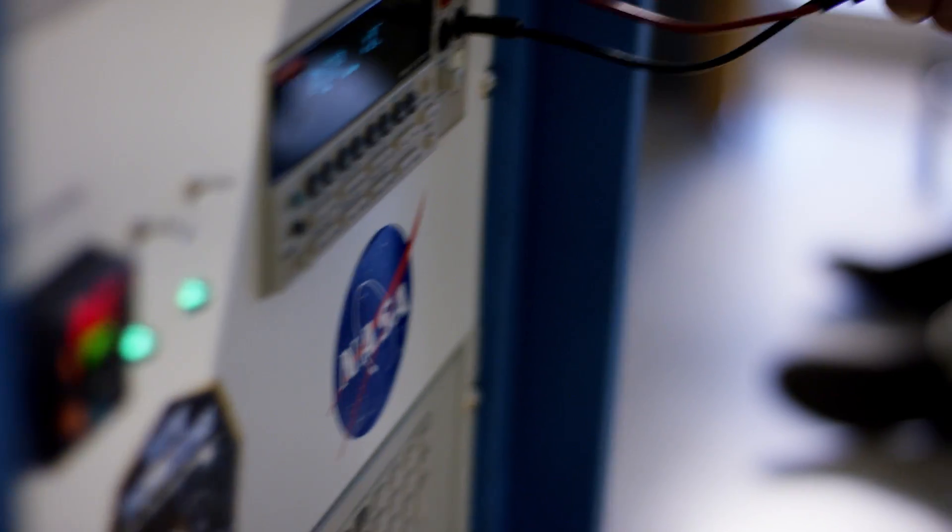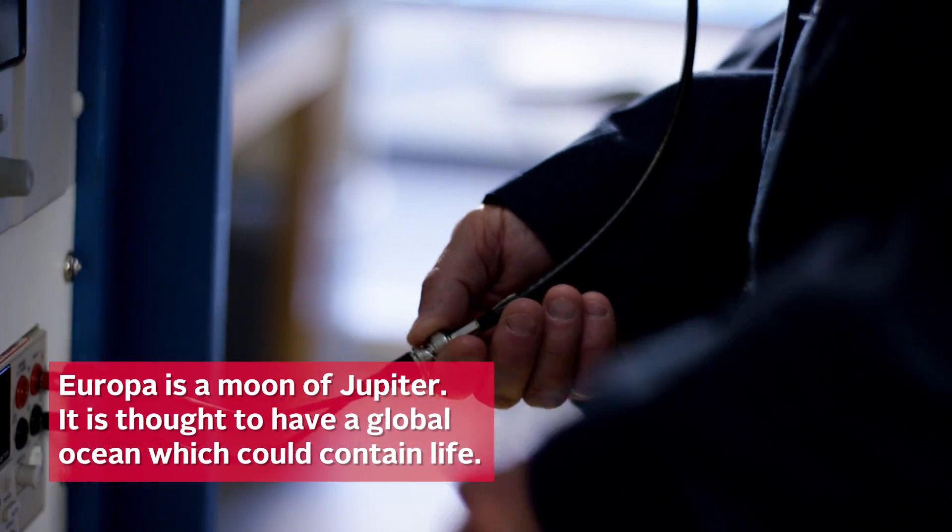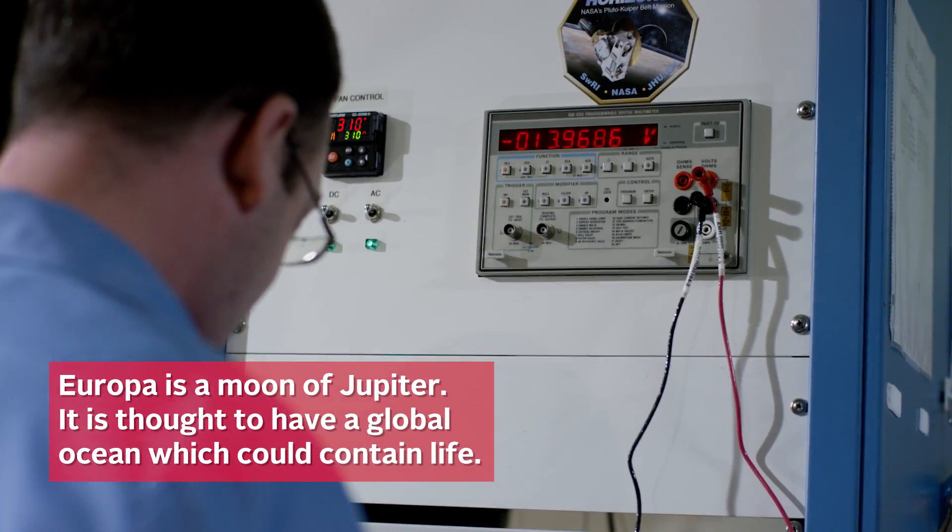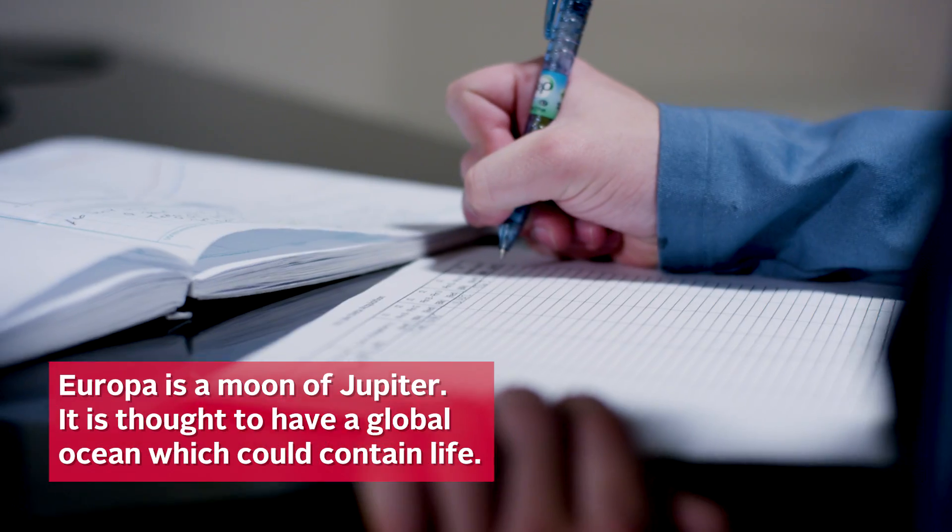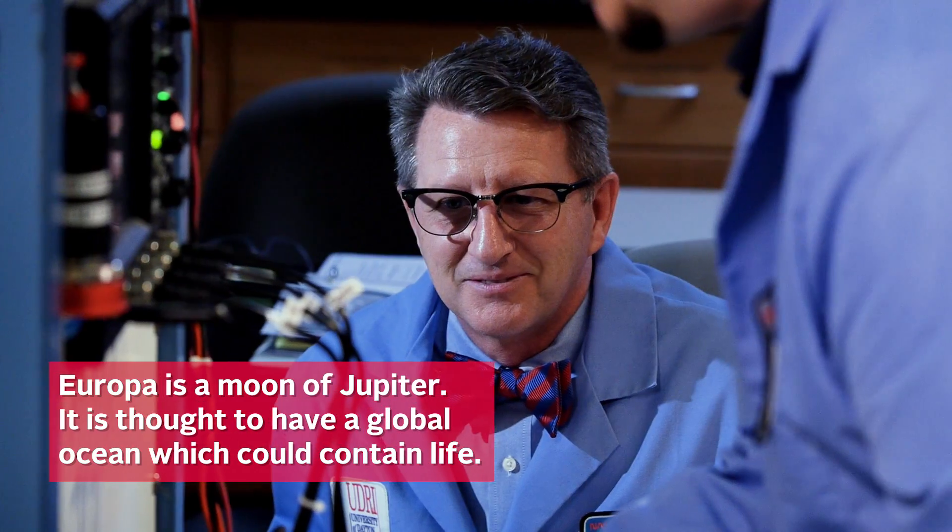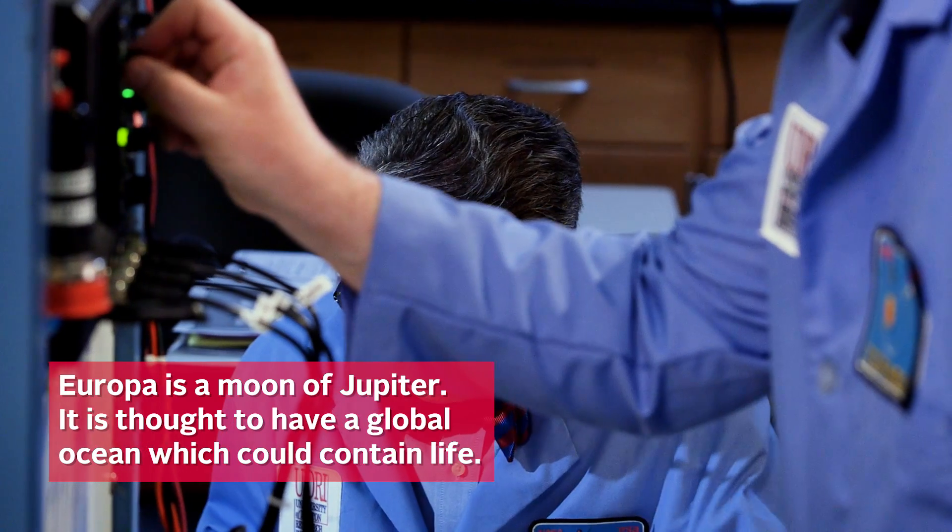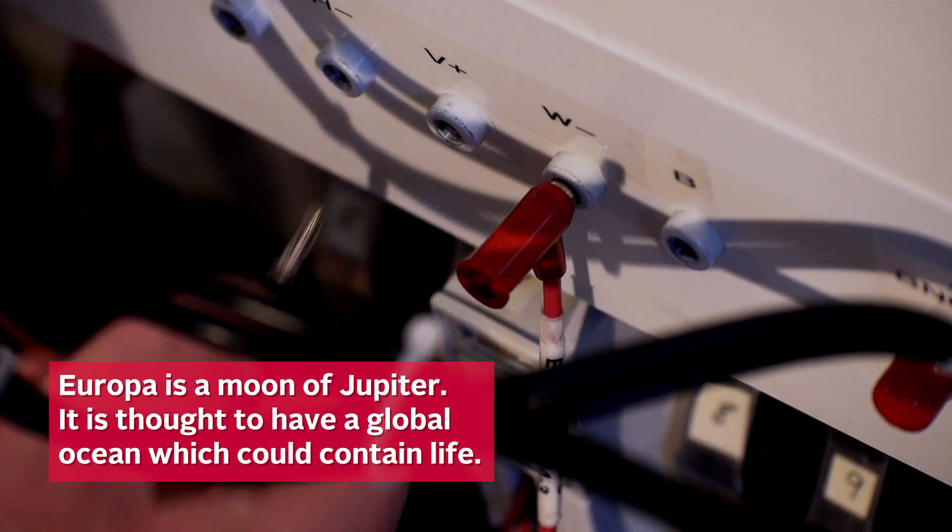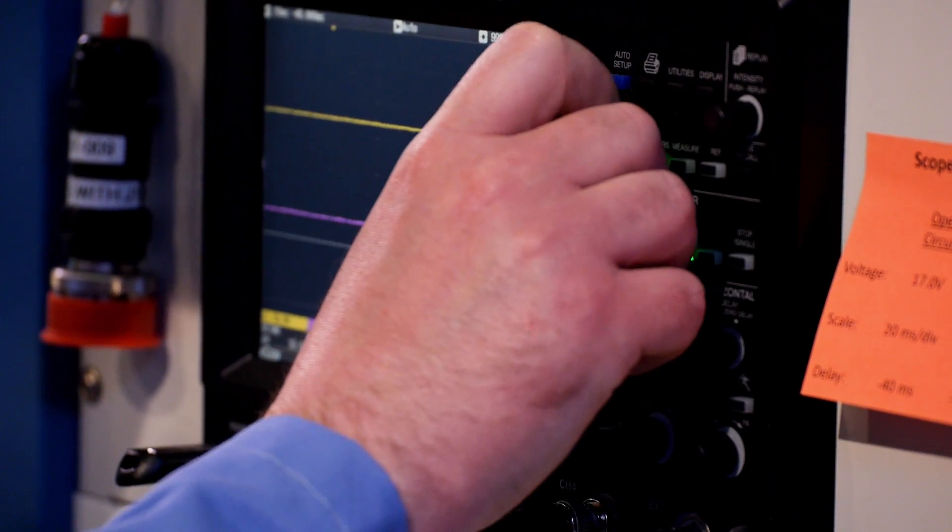We're putting it through the simulated conditions of what it would see on a notional mission to Europa, three and a half astronomical units out from Earth and a reduced power load that would be commensurate with the power it would be on its transit to Europa. Once it gets on station, from the telemetry data that we have, NASA will be able to determine how much power they're really gonna have to do science at Europa.